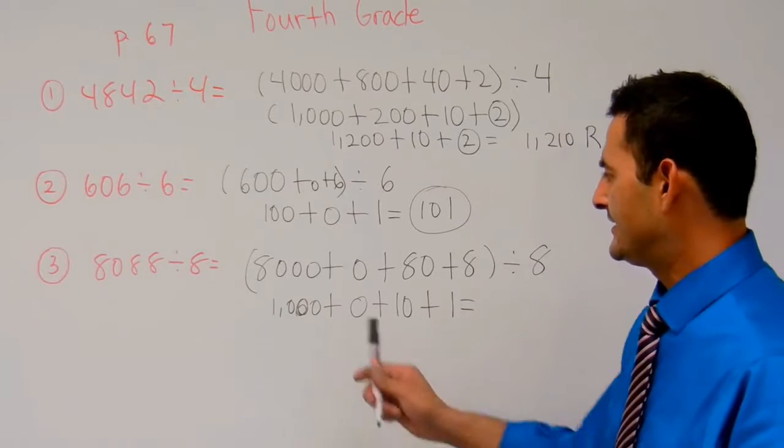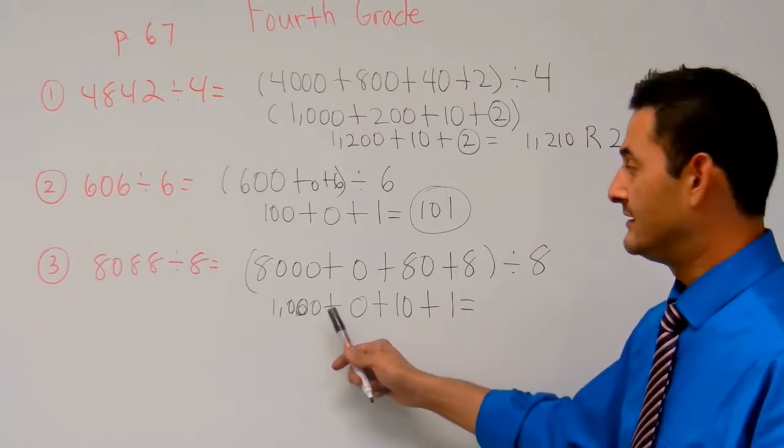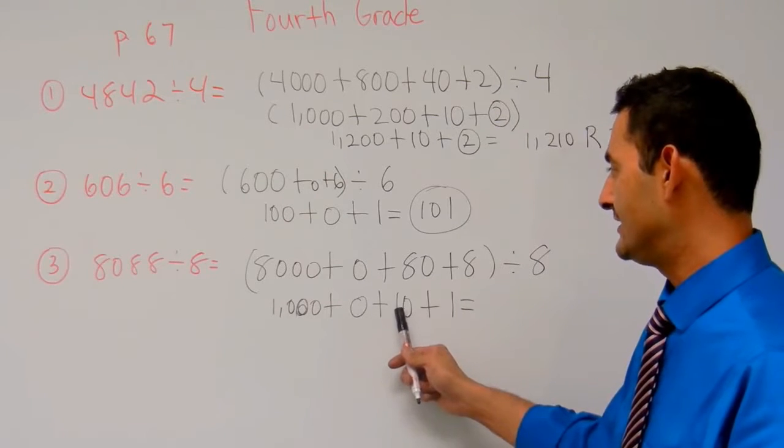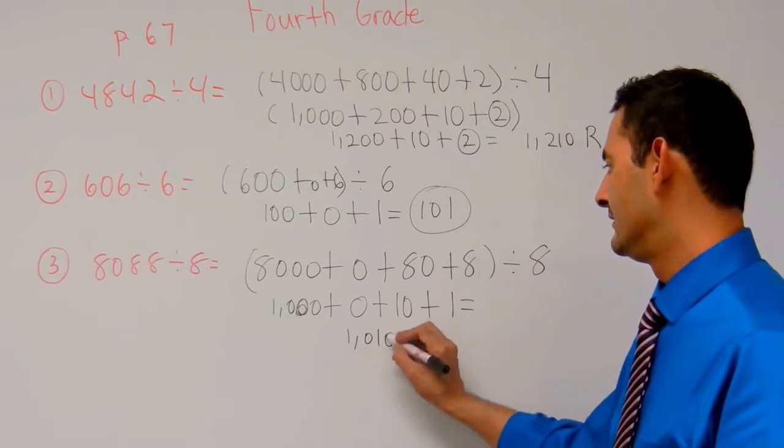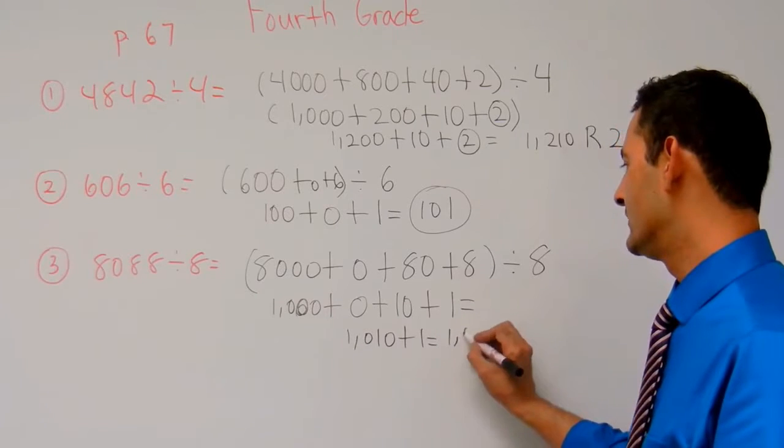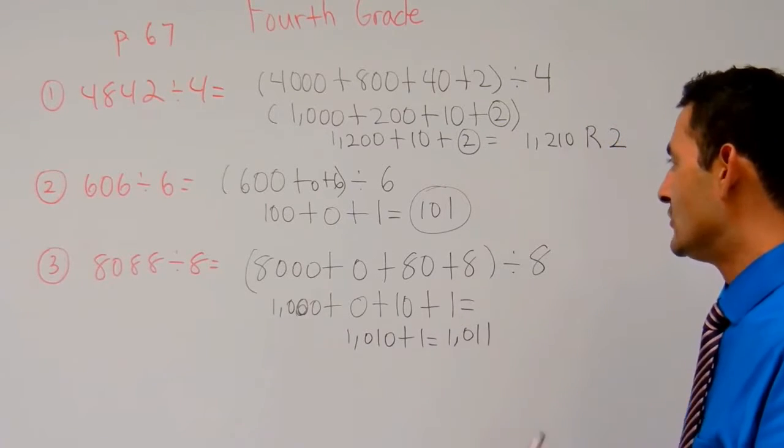So that's going to be 1,000 plus 0, that's 1,000, 1,000 plus 10, that's 1,010, plus 1 more equals 1,011.